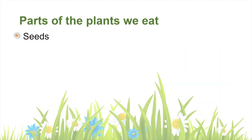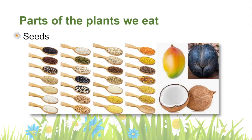We also enjoy seeds as a source of food. Some examples are sunflower seeds, sesame seeds and linseeds. Did you know that corn, rice and wheat are also the seeds of the plant? Here we have also added some unusual seeds like a coconut, mango and the world's largest seed that we eat, called coco de mer. Next time you are enjoying a meal, think about what plants you are eating and try to identify which part of the plant it is.